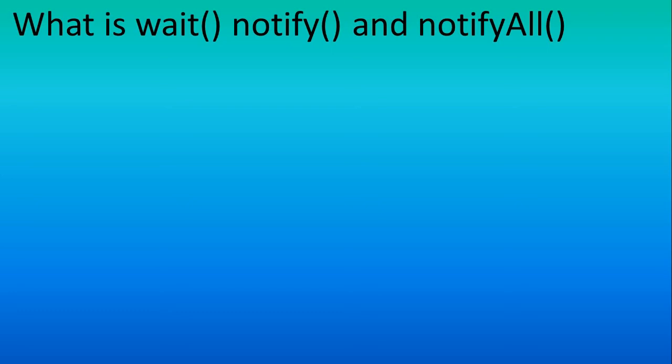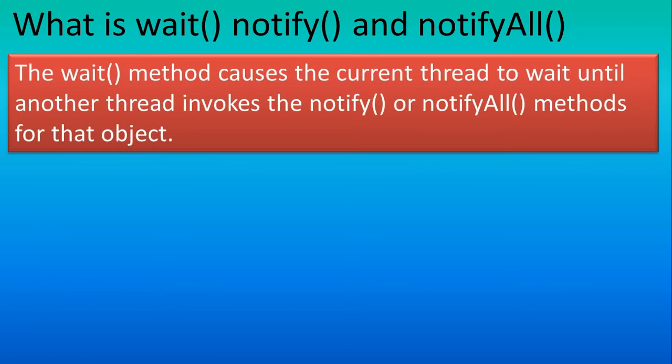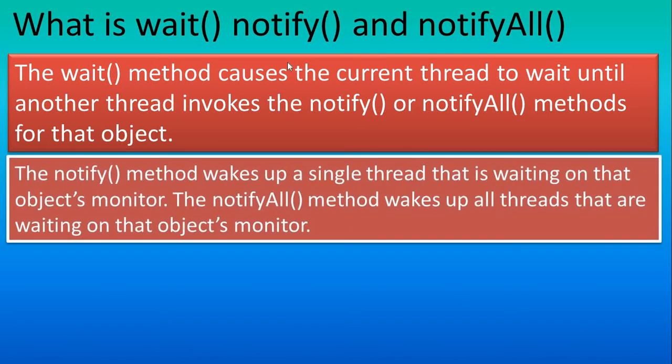In this tutorial we will see the use of wait, notify, and notifyAll methods in thread programming. The wait method causes the current thread to wait for execution till another thread invokes the notify or notifyAll method. The notify method wakes up a single thread that is waiting on the object monitor. The notifyAll method wakes up all the threads.